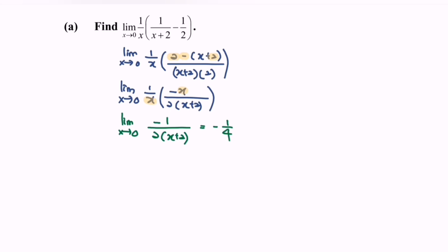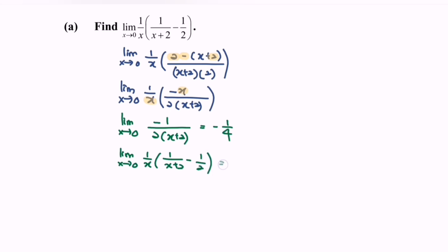So the limit when x approaches 0 for the function 1 over x multiplied with 1 over (x plus 2) minus 1 over 2 gives a value approaching negative 1 over 4.